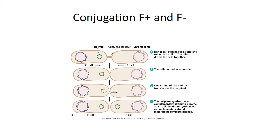It requires two live bacteria and uses a conjugation or sex pilus. We're going to start with conjugation between an F-plus and an F-minus bacterium. An F-plus bacterium is called an F-plus bacterium because it has the F, or fertility plasmid.